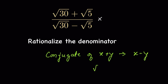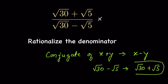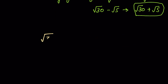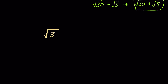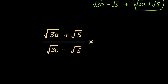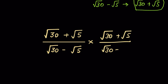So the conjugate of (√30 − √5) is (√30 + √5). If we multiply and divide by this conjugate, there is no change in the expression. So we write (√30 + √5) / (√30 − √5), then multiply and divide by the conjugate (√30 + √5) / (√30 + √5).